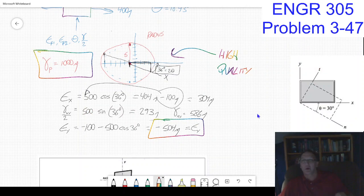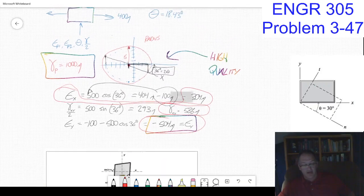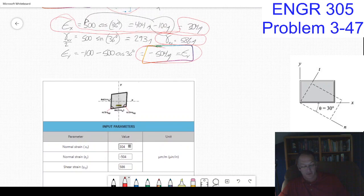Here we are. I went out and did the AimsWeb. I need to know epsilon_x, the strain in the xy, the shear strain in the xy, and the strain in the y. I put in the normal strain in the x and y: 304, 504, 586. Then I calculate.